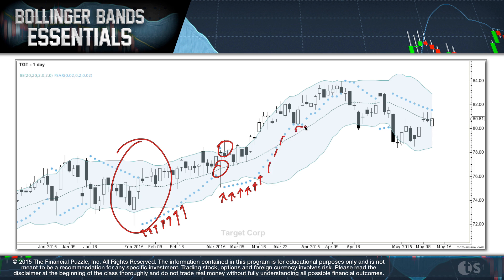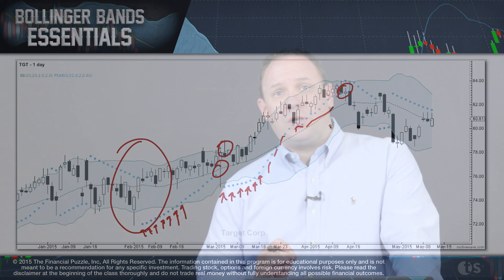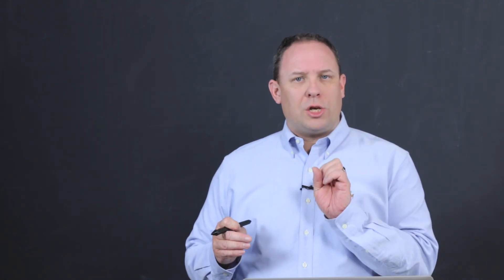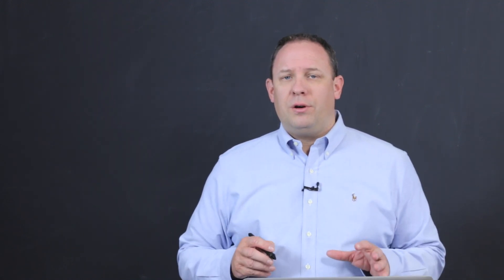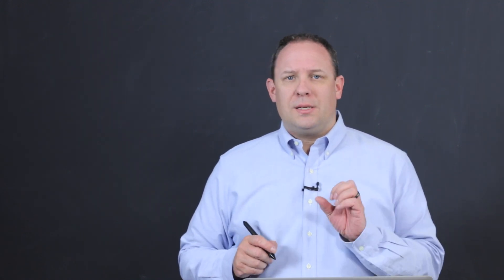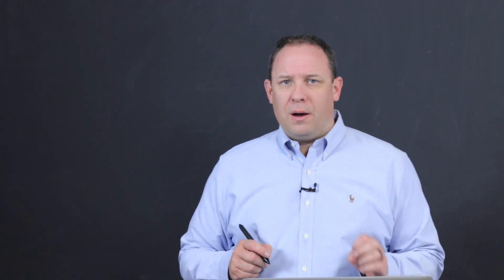You're in this trade all the way through until right here where it stops you out. This is a very, very good system, especially when you combine it with a system like the Bollinger system. The parabolic SAR is not a great system on its own, but when you combine it with something like the Bollinger Bands, it's a really, really powerful system.